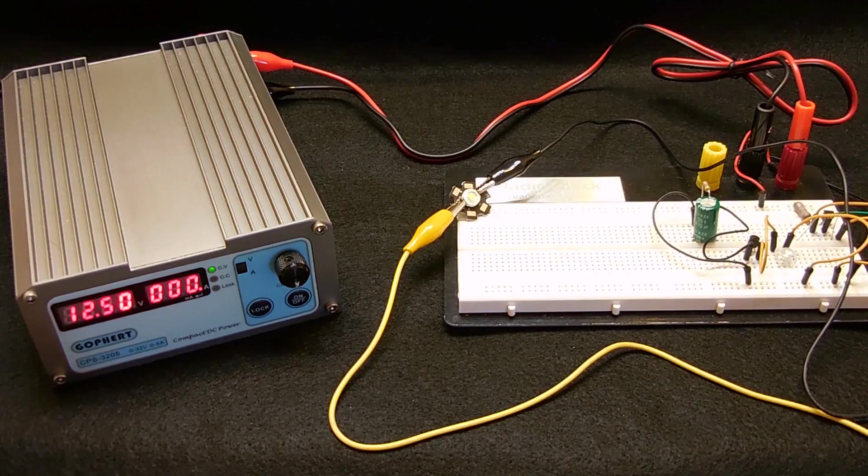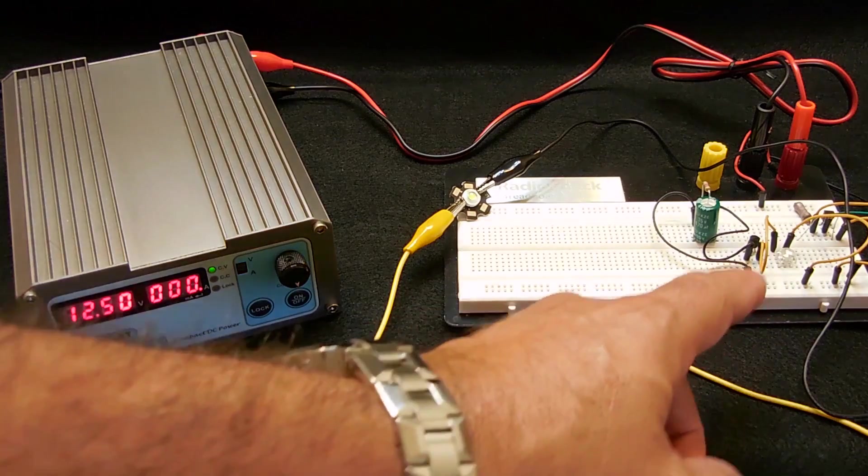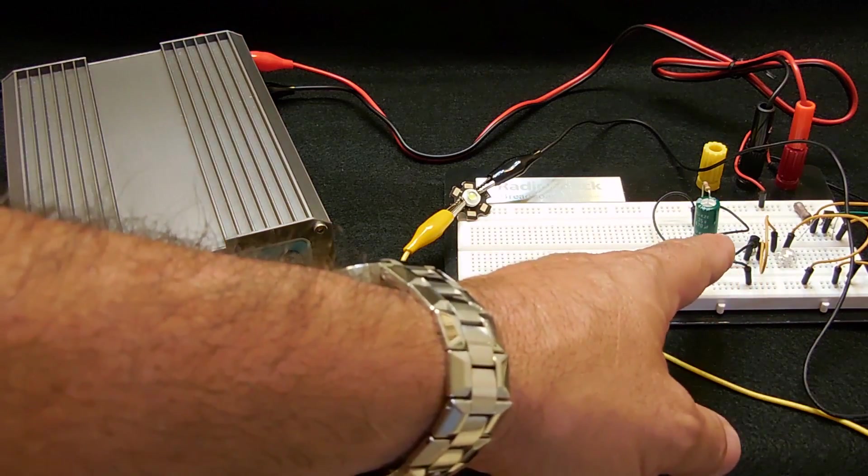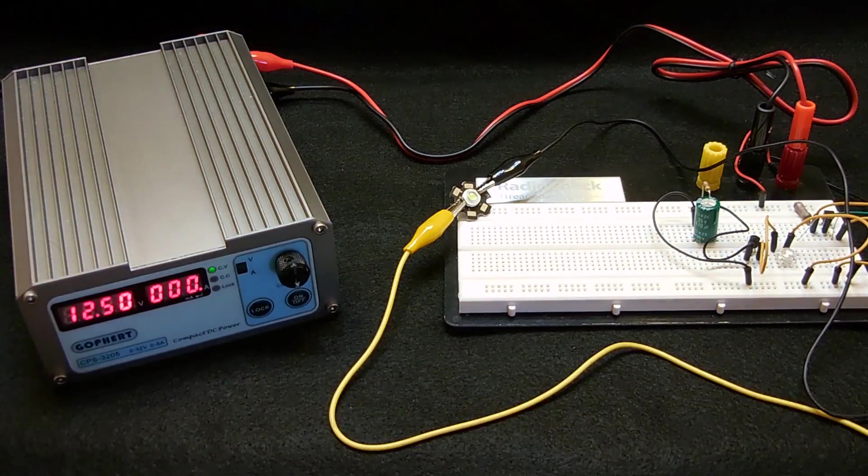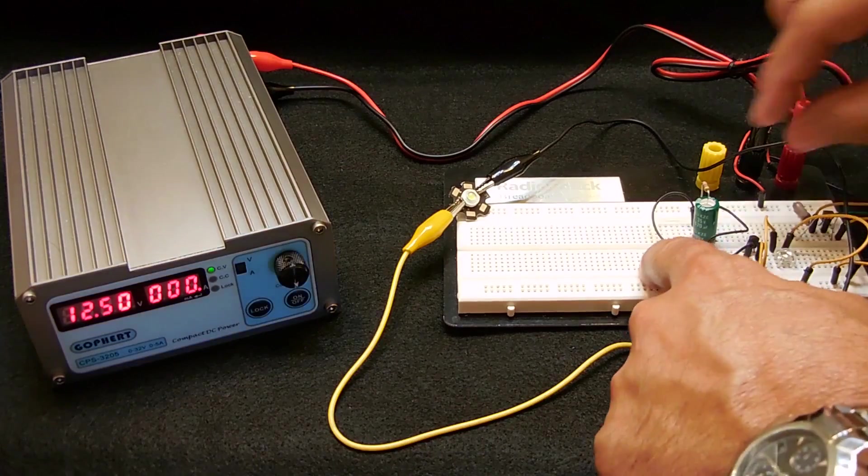Now what I want to show you is I'm going to make a few changes. First, I'm going to show you that changing out the resistor will adjust the flash rate. Right now we're at 4.7K, so let me remove that one.